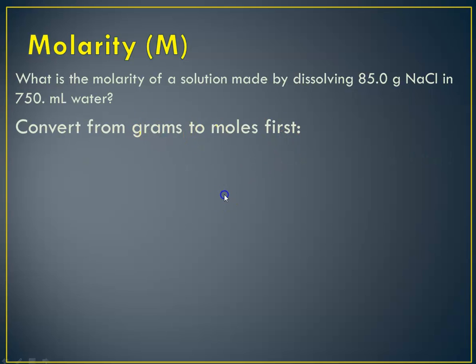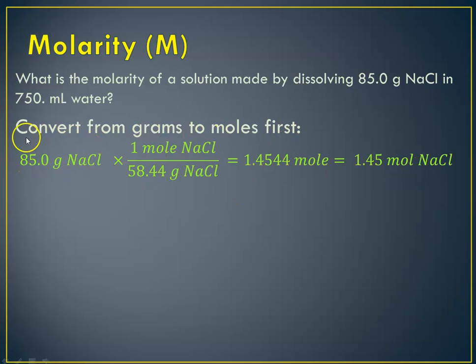So first we're going to convert from grams to moles. So here I've done that for you. I've said 85 grams of sodium chloride, always start with the given, times, this is molar mass. Notice that I've put my mole of sodium chloride in the numerator and my grams of sodium chloride in the denominator so that grams cancels out, grams cancels out, and that leaves me, when I plug it into my calculator, with 1.4544 and a whole bunch of more numbers. But we know that we were given 3 and 3, so we're rounding this number to 3. Our third significant digit is the 5. The number after it is a 4. So that means we've solved for 1.45 moles of sodium chloride.